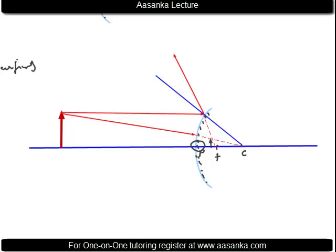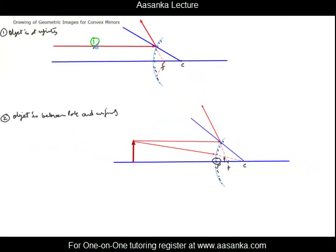Notice we used the same properties as in concave mirrors. We took a parallel ray and after reflection connected it through the focus — same applies here, where a parallel ray after reflection appears to come from the focus. The second property used is that any ray appearing to go toward the center of curvature has a reflected angle of zero and retraces its path. Extending these rays into the virtual space where they intersect gives the image. These are the fundamental principles — understand them so you don't need to memorize.